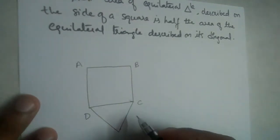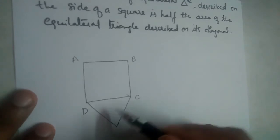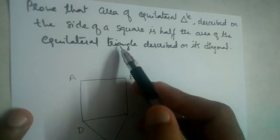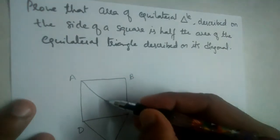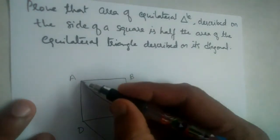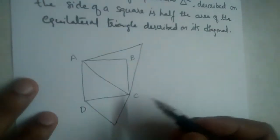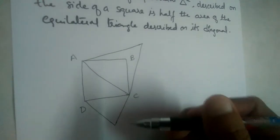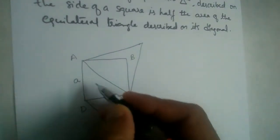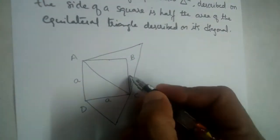We can draw it on any side — this is an equilateral triangle. We should prove that the area of this triangle is half of the area of the equilateral triangle described on the diagonal. If we draw an equilateral triangle on the diagonal, we should prove that the area of the smaller triangle is half of the area of the bigger triangle. Now, let us take the sides of the square to be A — each side is A.